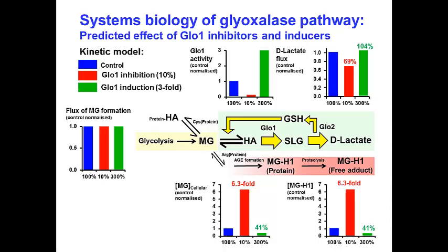In this slide, I show the first attempt at systems modeling of the glyoxalase pathway. A systems biology approach will be important to gain a more secure and detailed understanding of regulation of the pathway. I computed a mathematical model of methylglyoxal flux from glycolysis being metabolized through the glyoxalase pathway to D-lactate, and also reversibly binding to thiols on proteins and irreversibly binding to proteins to produce MGH1.